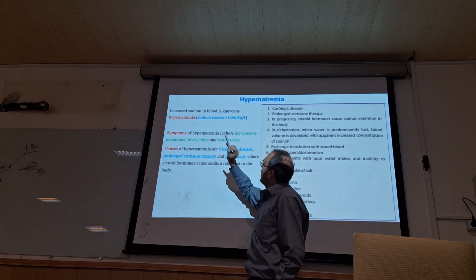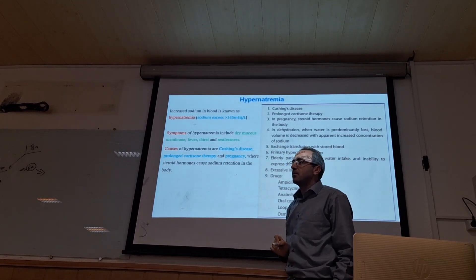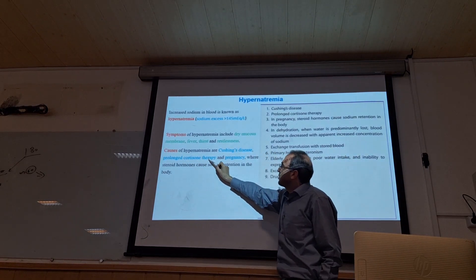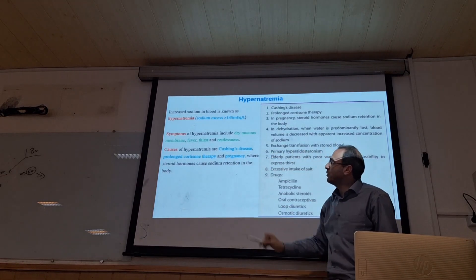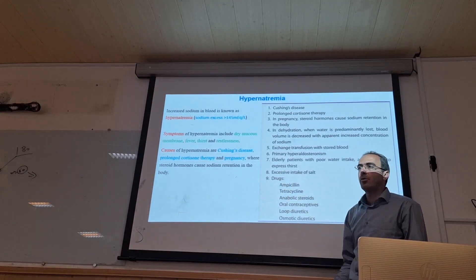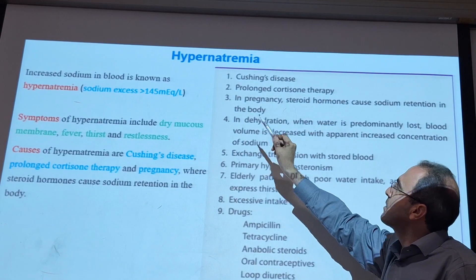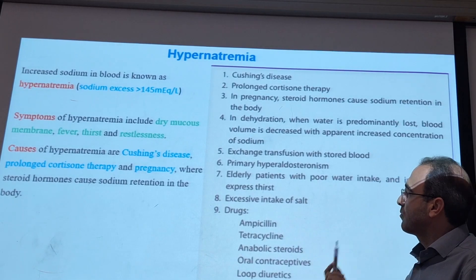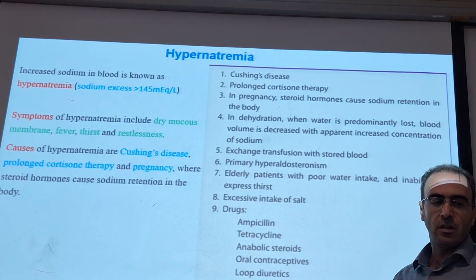The symptoms of hypernatremia include dry mucous membranes, fever, thirst, and restlessness. The main causes of hypernatremia are Cushing's disease, prolonged corticosteroid use, stroke, and pregnancy — because pregnancy requires steroid hormones that cause sodium retention in the body. Some drugs like OPC, tetracycline, and NSAIDs also lead to hypernatremia. Causes can be due to increased intake or decreased excretion, increased tubular reabsorption, or Cushing's disease.